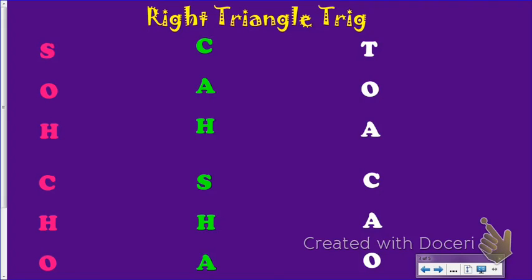The first thing you learned about whenever you did this was SOHCAHTOA. SOHCAHTOA is an acronym that helped us remember what our trig ratios were. Our first one was sine, our second one was cosine, and our last one was tangent. Those ratios gave us a ratio of two certain sides of a right triangle.